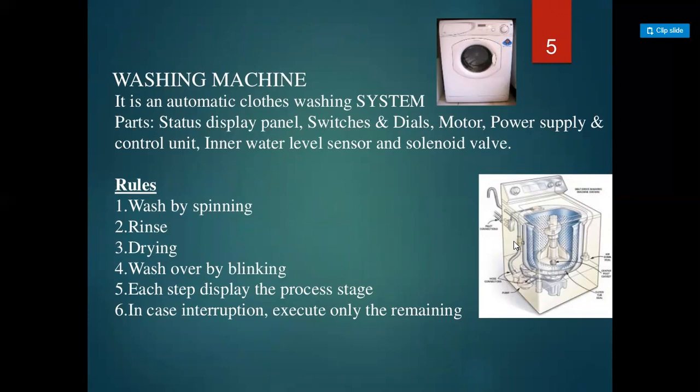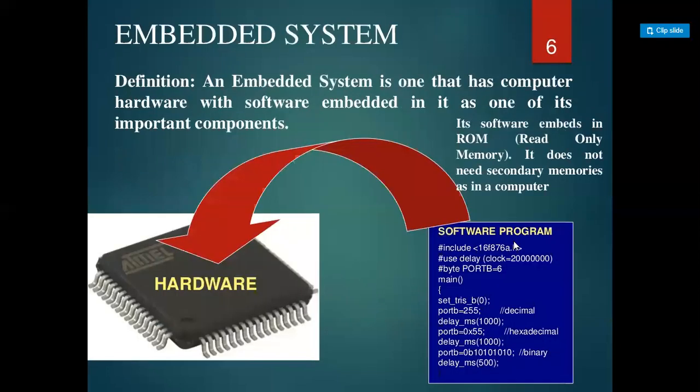Next is a washing machine — an automatic cloth washing system. Its parts include a status dial panel, switches and dials, motor, power supply, control unit, inner water level sensor, and solenoid valve. The rules are: wash by spinning, rinse, drying, wash over by blinking, each step displays the process stage, and in case of interruption, execution continues only for the remaining steps. This is another example of a system.